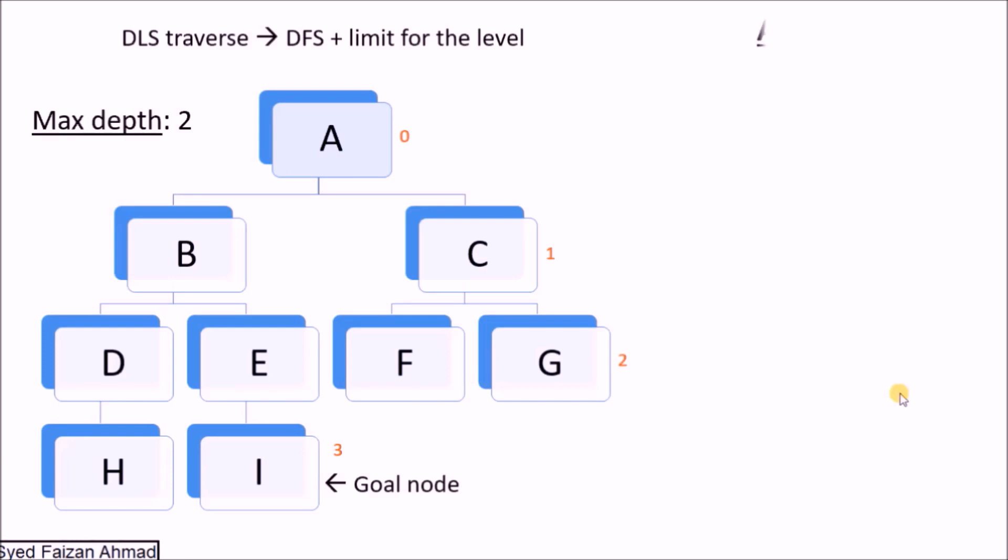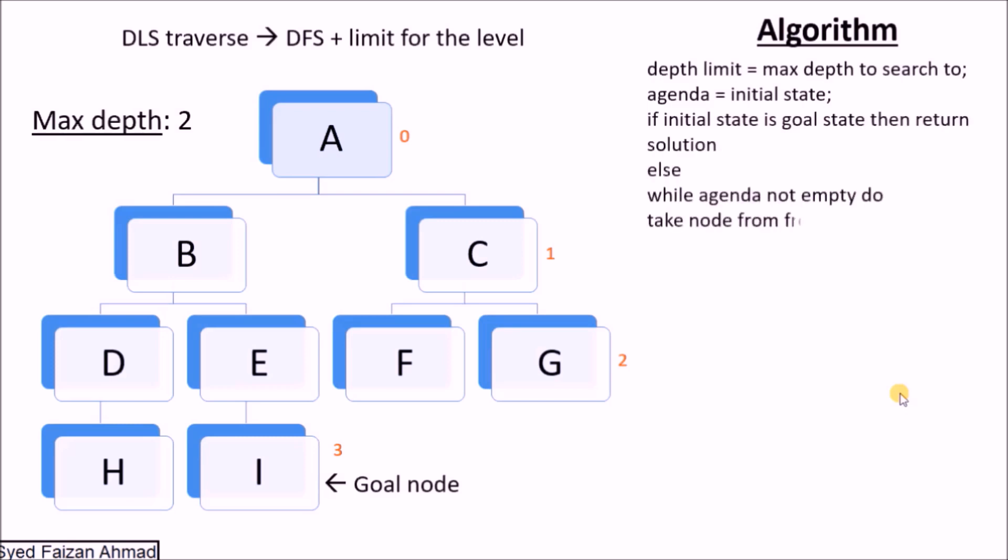The algorithm: depth limit equals max depth to search, agenda equals initial state. If initial state is goal state, then return solution.